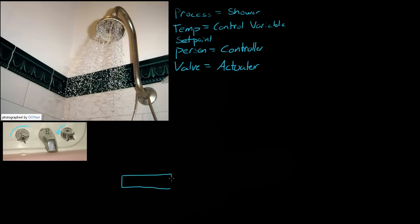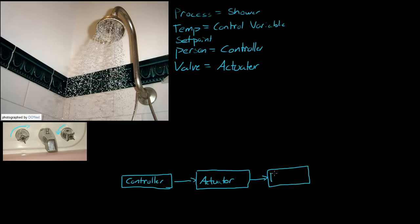So we have the controller, and the controller changes the actuator or the valve. The actuator is affecting the process, and the process affects our control variable — the temperature of the water. Now something else that affects the process are disturbances. Let's say for some reason the dishwasher kicks on or the washing machine kicks on — those are disturbances that kick in.